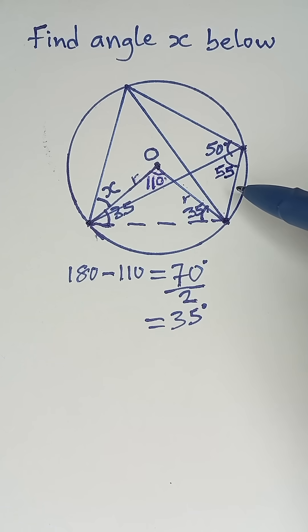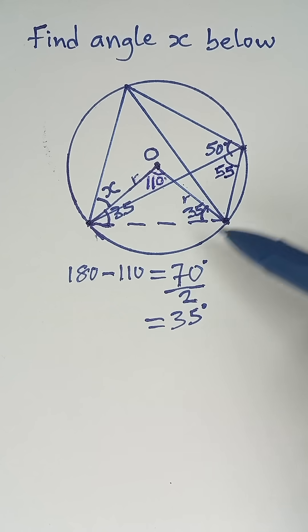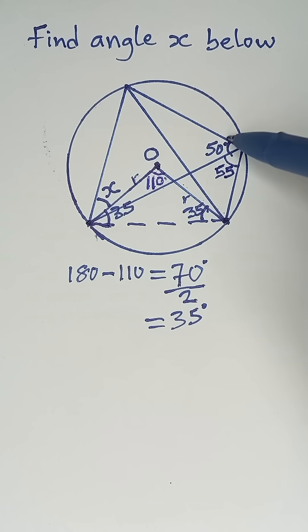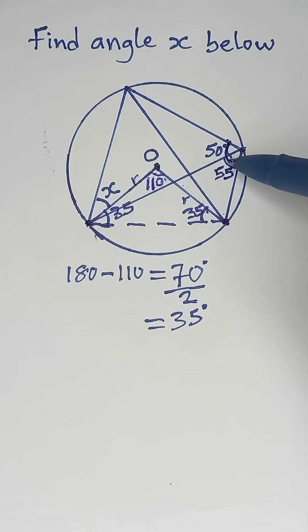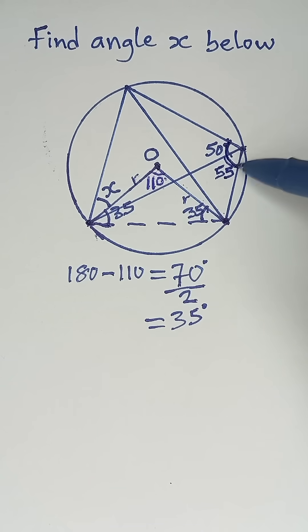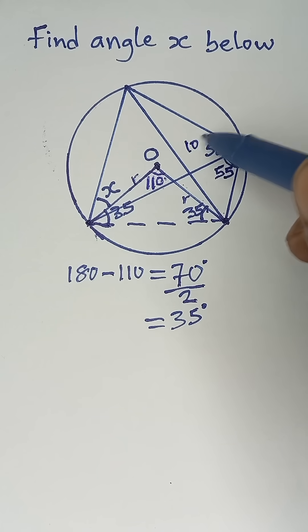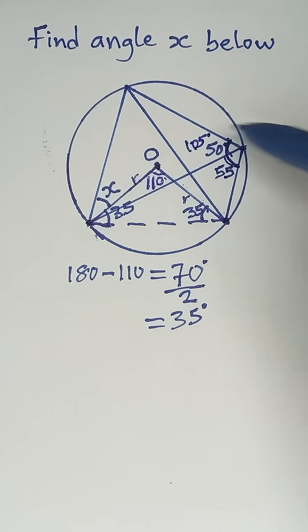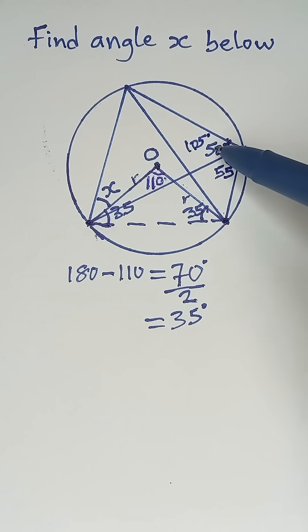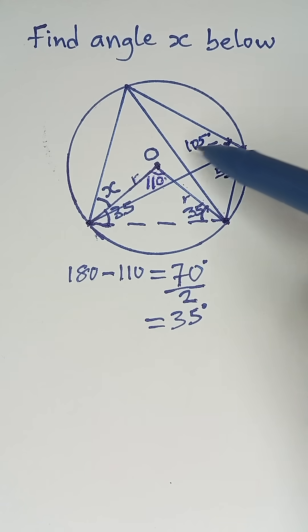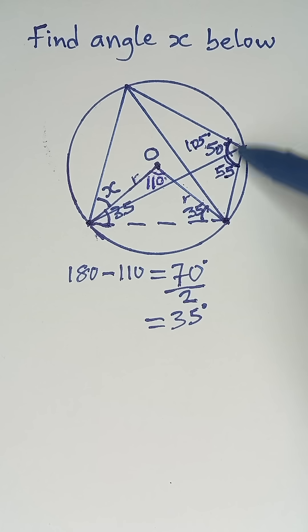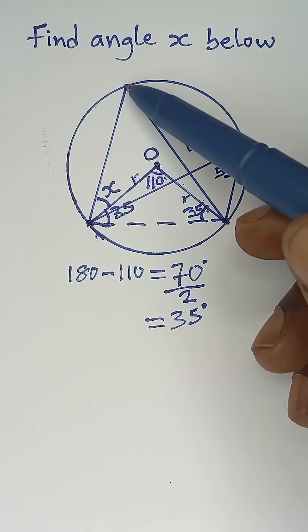So adding 50 plus 55 gives us 105°, meaning the whole of this angle is 105°.